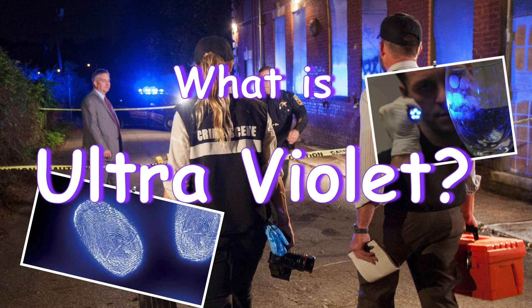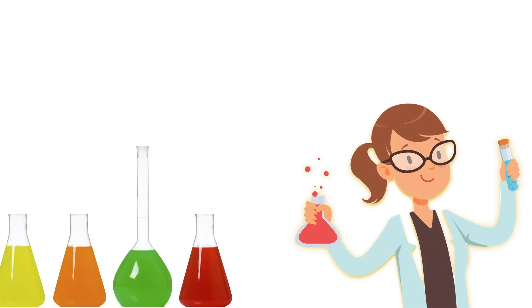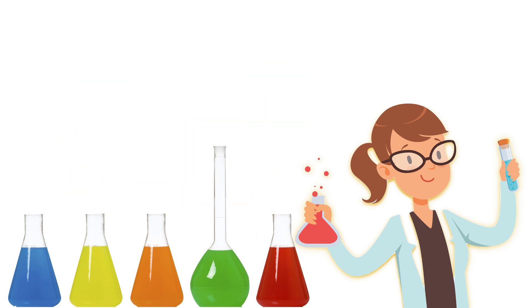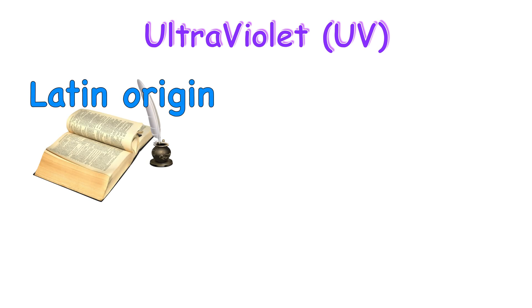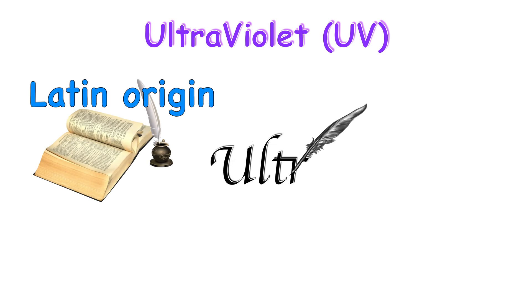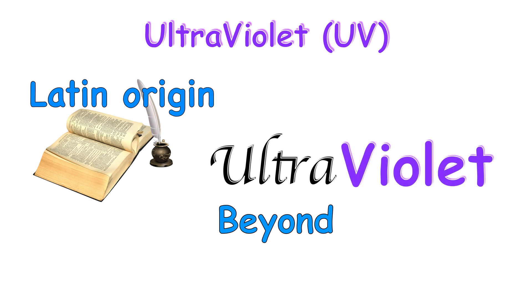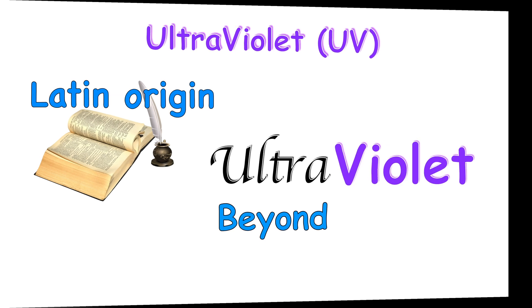What is ultraviolet? Brought to you by my book of chemistry. The word ultraviolet, or UV, has a Latin origin. The Latin prefix 'ultra' means 'beyond.' Therefore, ultraviolet means beyond the violet end.